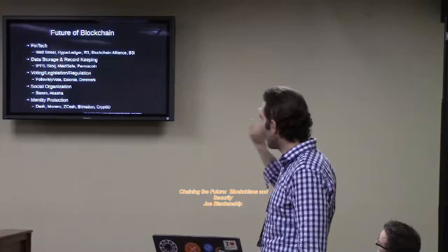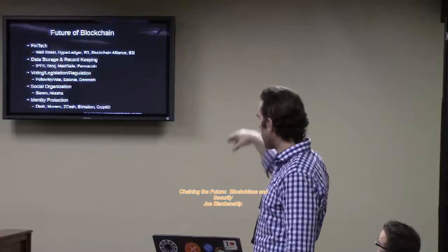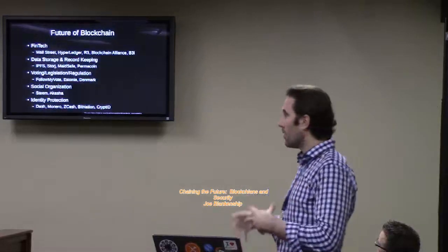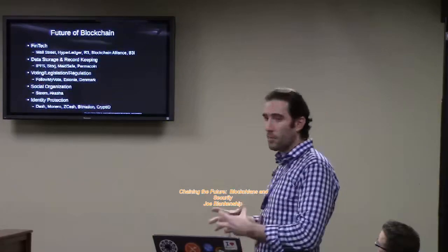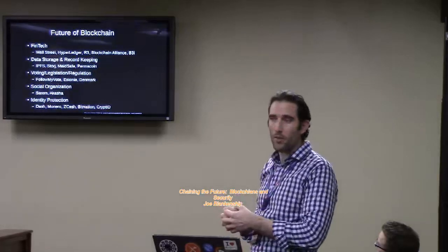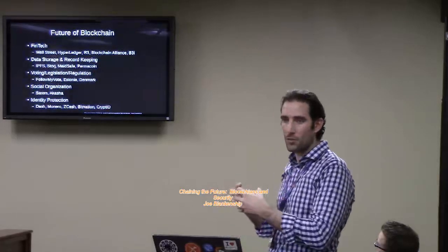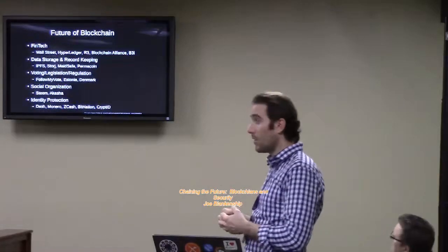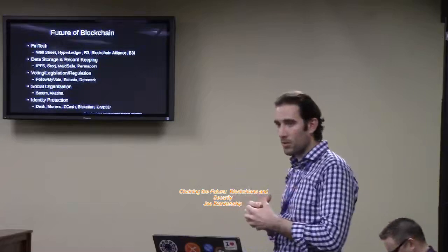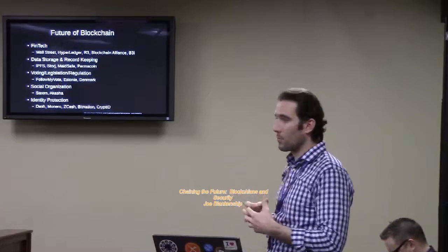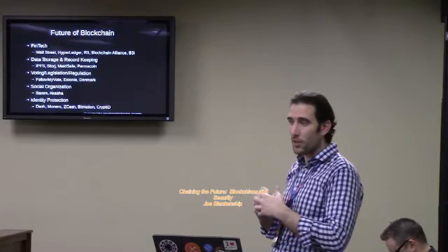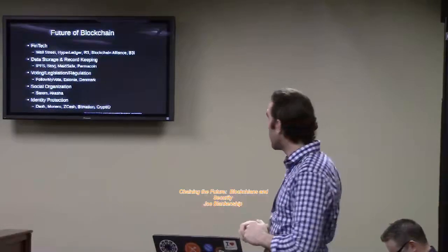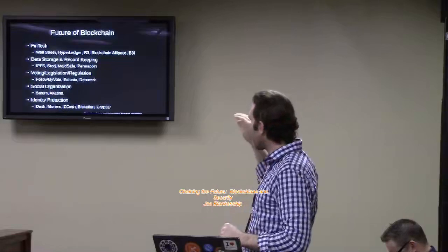So data storage, record-keeping. Storj, MaidSafe, Filecoin. All these projects, they all utilize that Merkle tree hash tree structure. They try to pack as much data into Merkle tree as possible to store that in a small space as possible. Which means that they can both store a ton of data, distributed storage, and also make sure that it's redundant, protected, encrypted, and safe. Not just from the path from A to B, but in the data stores themselves.